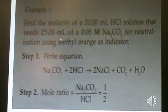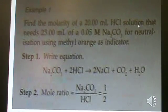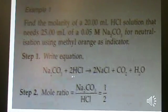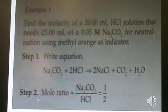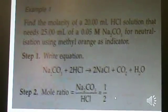Find the molarity of 20 milliliter HCl solution. It needs 25 milliliters of 0.05 M Na2CO3 for neutralization using methyl orange as indicator. First, we write the equation Na2CO3 plus 2 HCl equals 2 NaCl plus CO2 plus H2O. Then we find the mole ratio, so Na2CO3 to HCl, we add all the atomic numbers, so that you get one half.